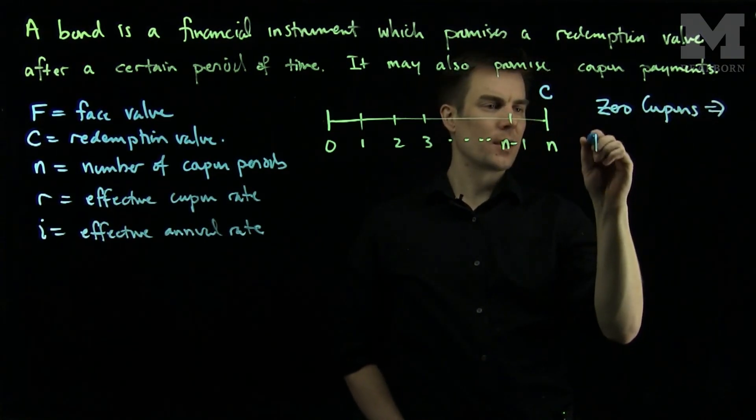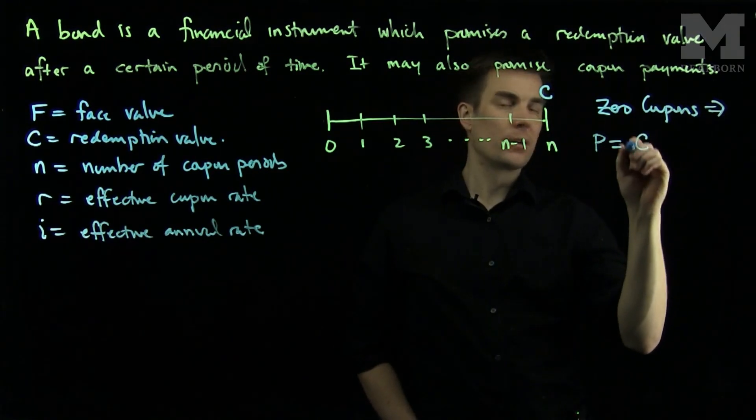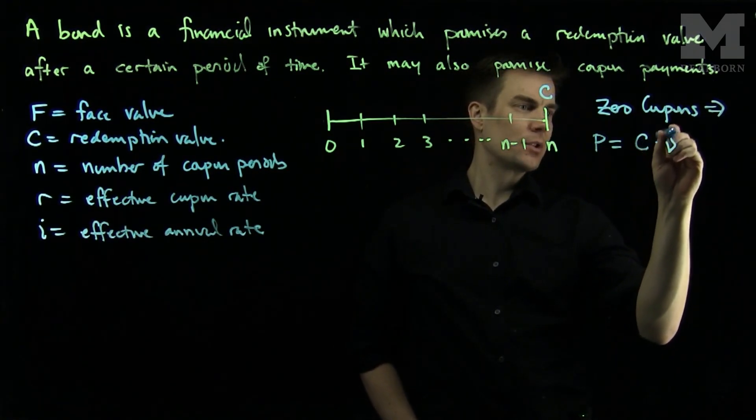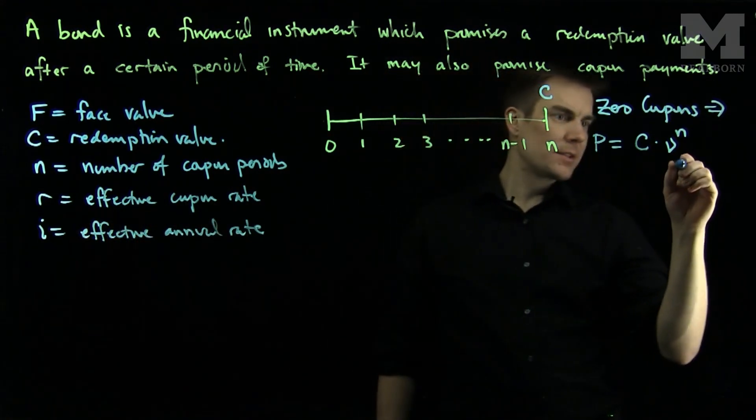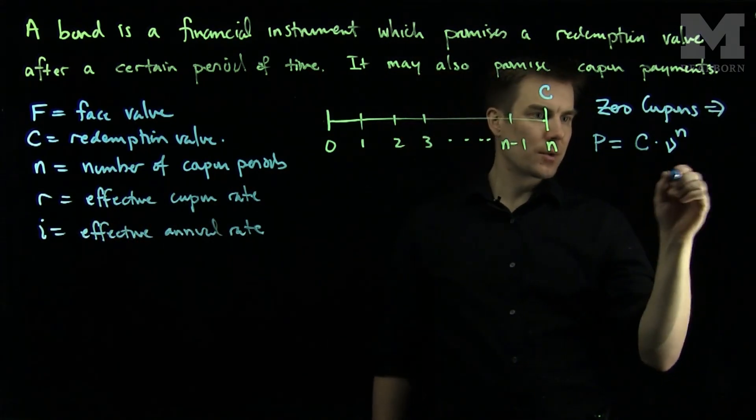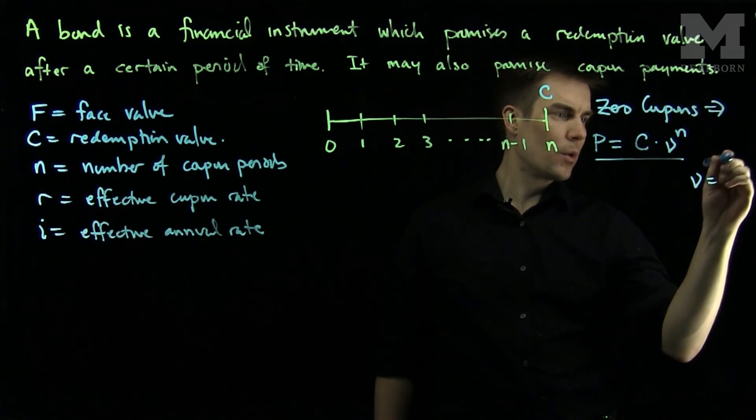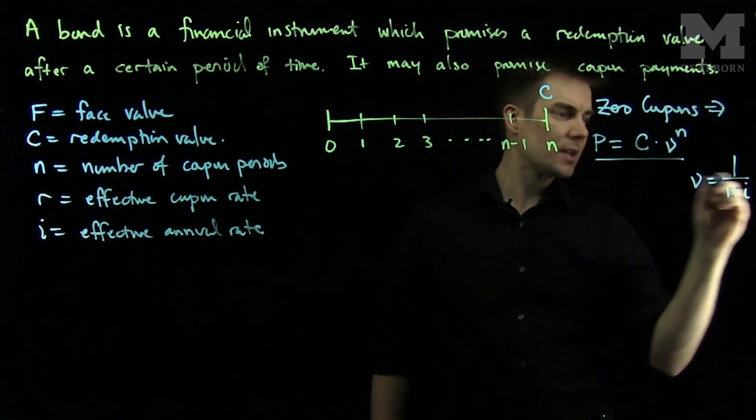So for zero coupons, the price will be the redemption value C times ν^N, where this ν corresponds to the effective annual interest rate. So here, ν will be 1 over 1 plus I.